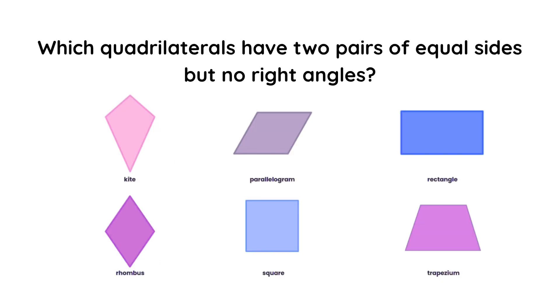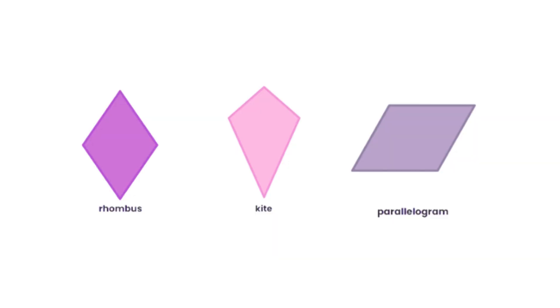Which quadrilaterals have two pairs of equal sides but no right angles? The answer is rhombus, kite, and parallelogram.